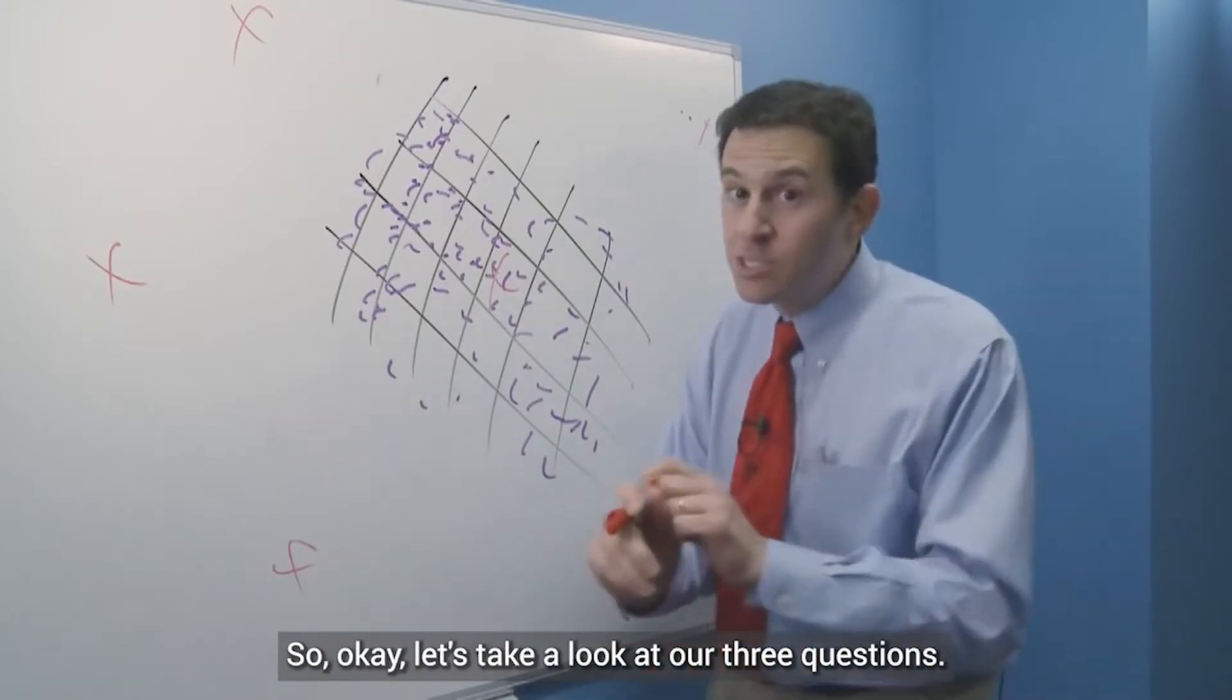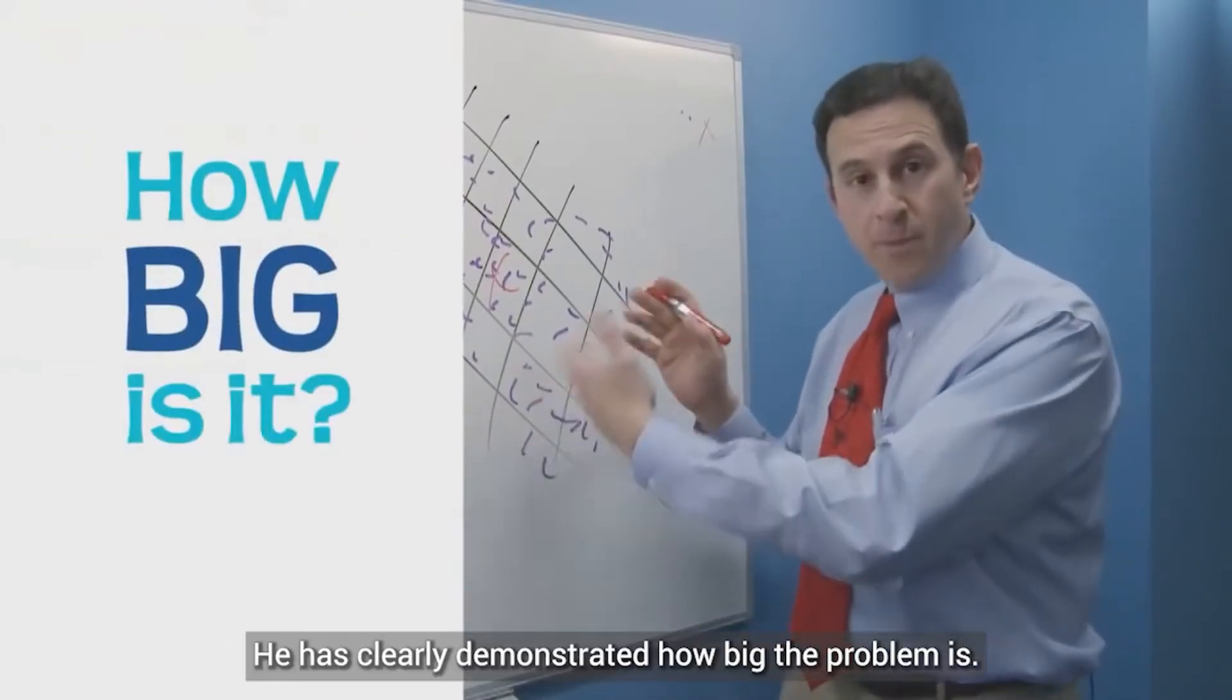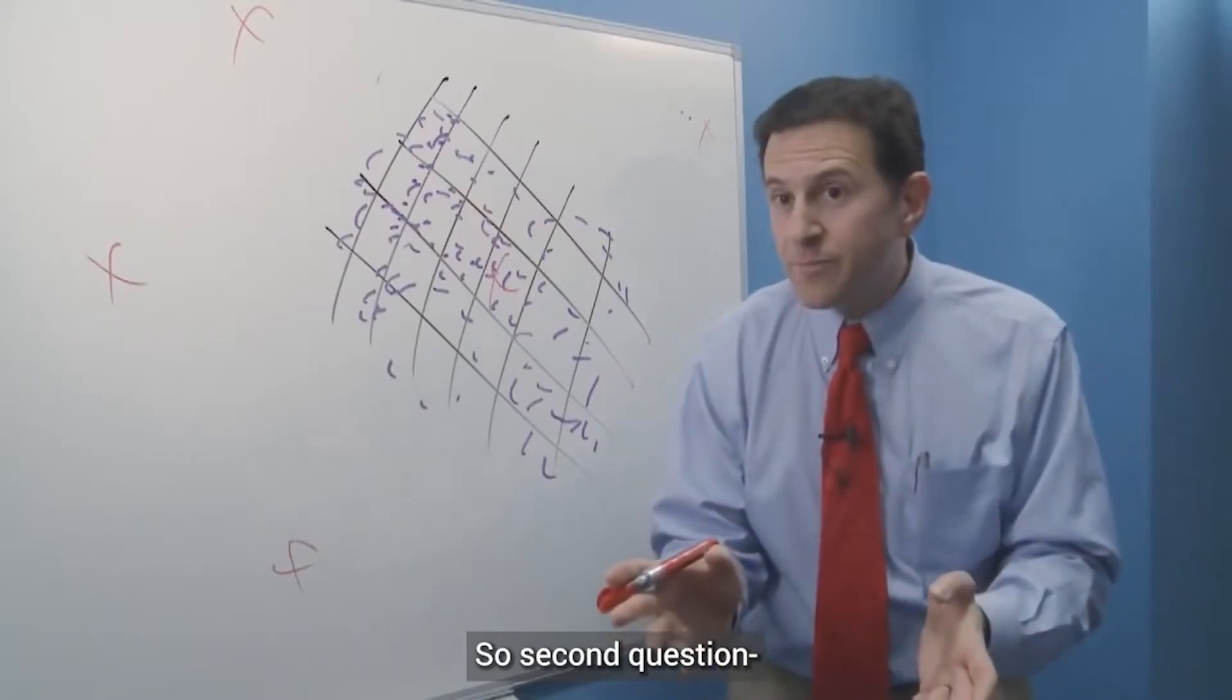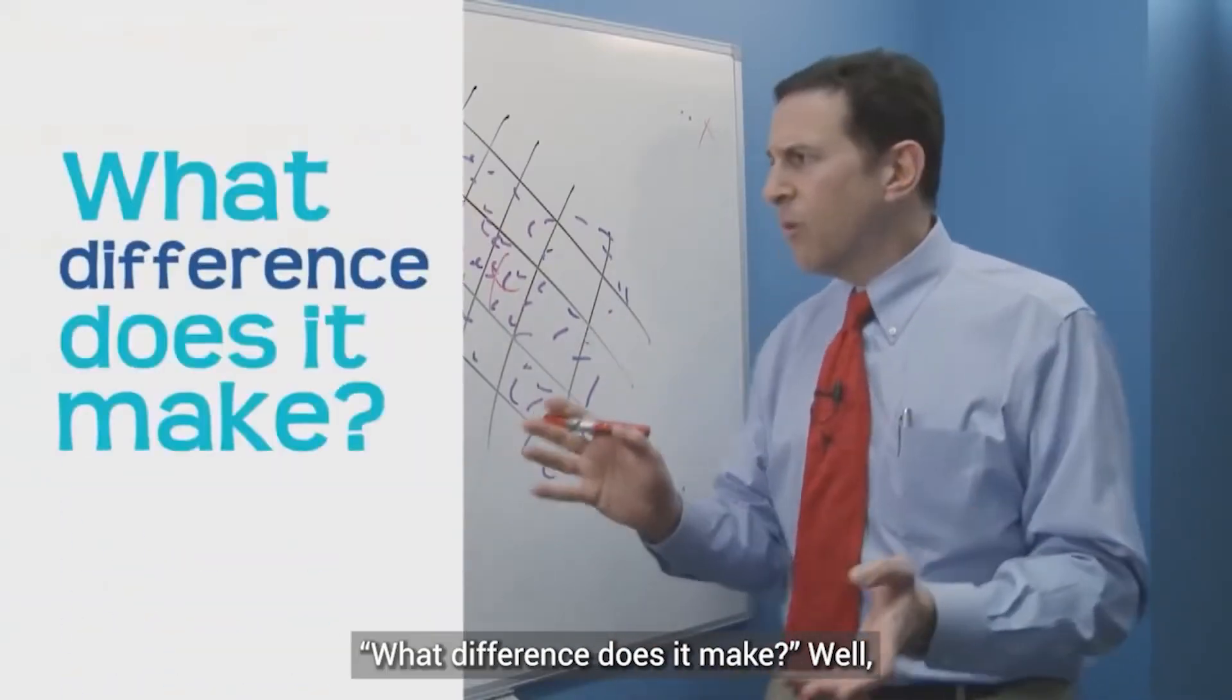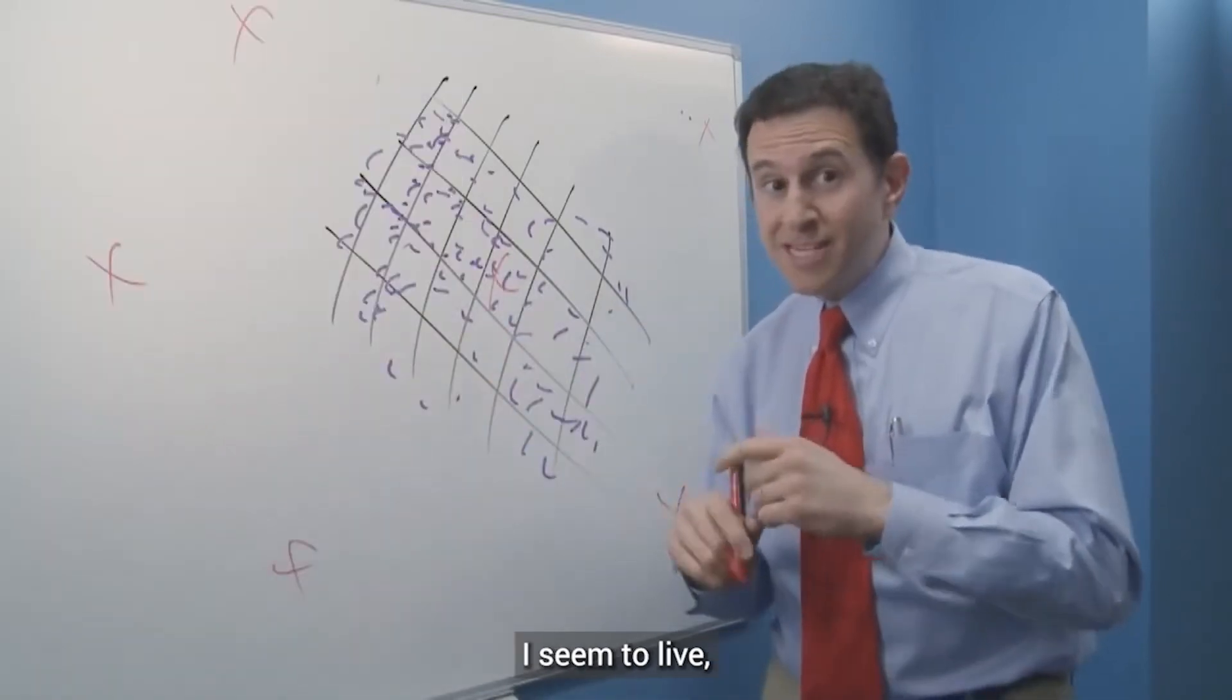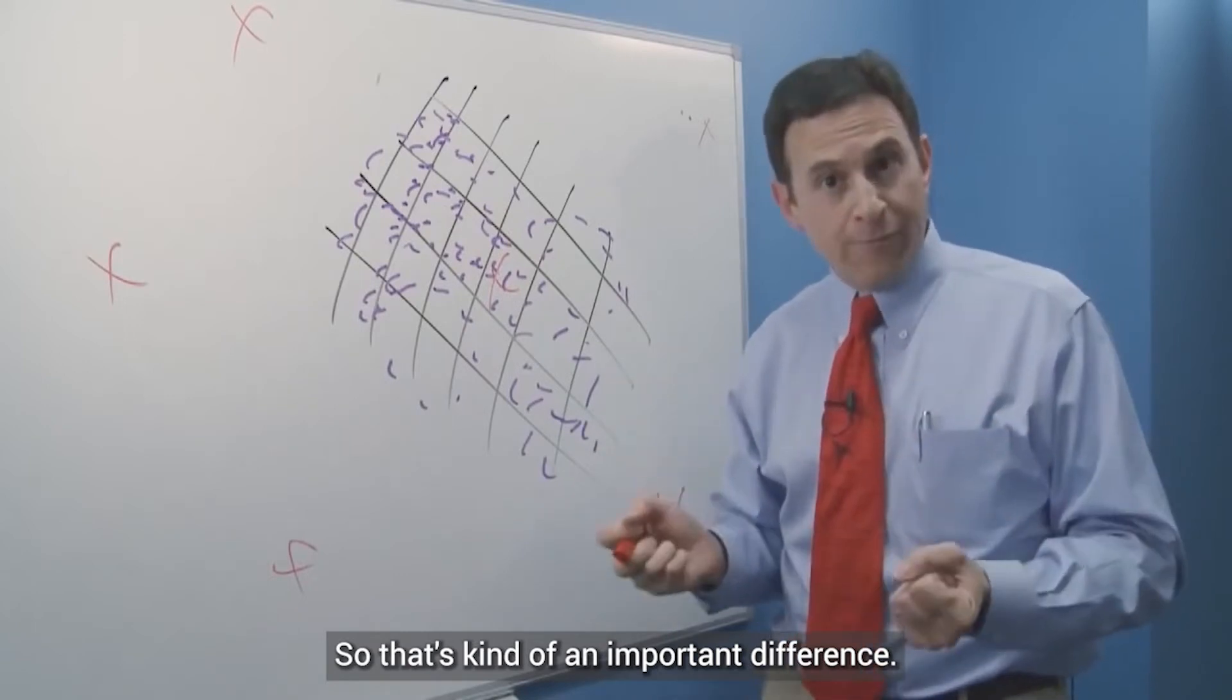So that seemed to be pretty good evidence. So okay, let's take a look at our three questions. How big is it? He has clearly demonstrated how big the problem is. So we're answering the question of how big it is. So second question. What difference does it make? Well, if I live far away from the Broad Street pump, I seem to live. And if I live close to the Broad Street pump, I die. So that's kind of an important difference.